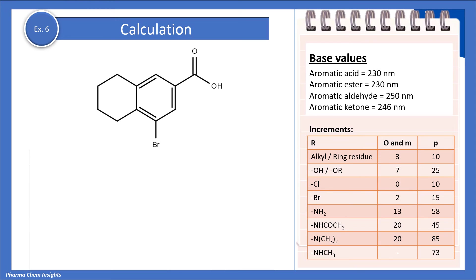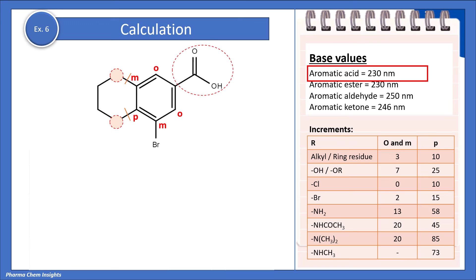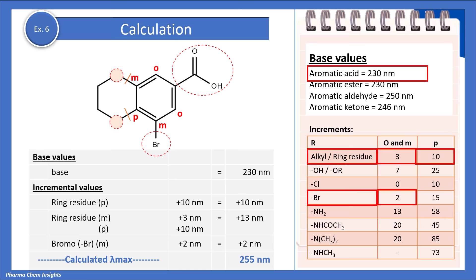Example 6: let us assign numbering to the positions. We have an aromatic acid group; the base value is 230 nm. We have an alkyl ring residue at the para position with an increment of 10 nm, and one more alkyl ring residue at the meta position with an increment of 3 nm. We also have a bromo group at the meta position giving an increment of 2 nm. Calculating all these, the lambda max for this compound is 255 nm.